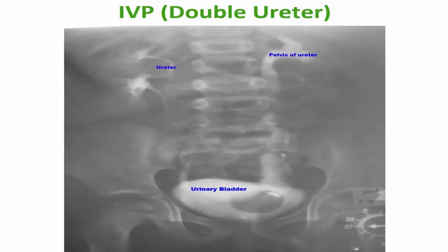Also again, intravenous pyelography showing a double ureter on the right side — this is an abnormality. This is the ureter on the left side, and this is the urinary bladder.